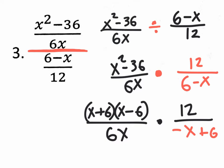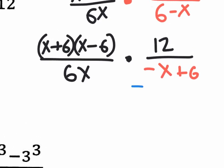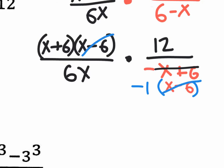Right now I could almost cancel, but notice that there's a negative x down here and up here I have positive x's. So I'm going to factor out a negative one from the denominator. If I pull out a negative one from negative x plus 6, I'm left with x minus 6. So factoring out the negative one on the outside, x minus 6 on the inside. Now I can cancel out this entire binomial x minus 6 with the x minus 6 in the numerator. These guys are going to cancel.